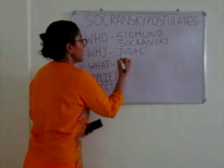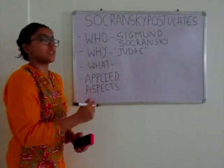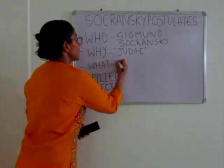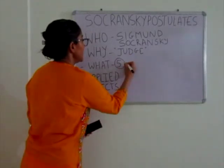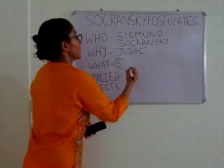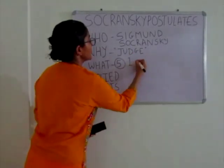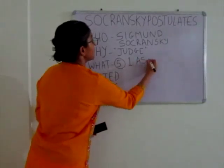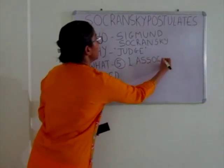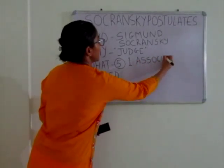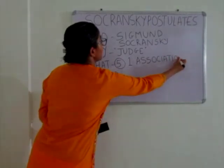Coming to the main part of the topic — what are these postulates? There are a total of 5 postulates. Number one: Association. Association means the level of the microorganisms must increase at the site of the disease.